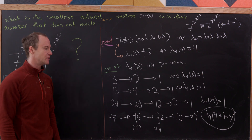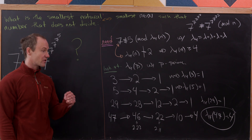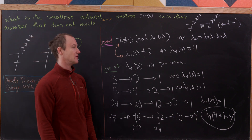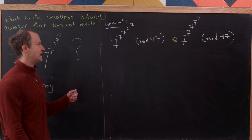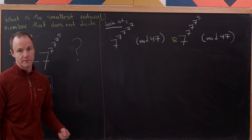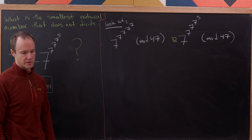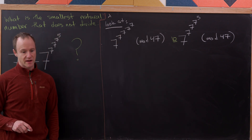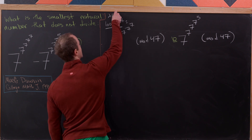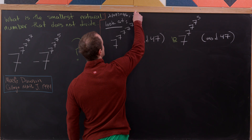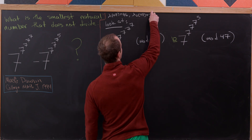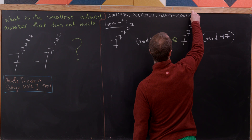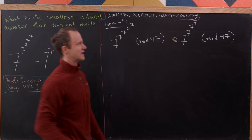This doesn't immediately tell us the towers are incongruent mod 47 — it tells us 47 is the first prime where they might be incongruent. We now just need to check. We compare 7^(7^(7^(7^7))) mod 47 versus 7^(7^(7^(7^5))) mod 47, reducing each exponent level using: lambda of 47 = 46, lambda sub 2 of 47 = 22, lambda sub 3 of 47 = 10, lambda sub 4 of 47 = 4.